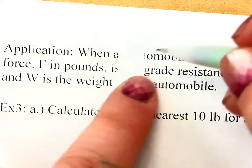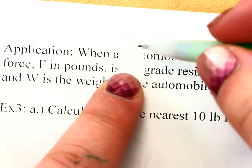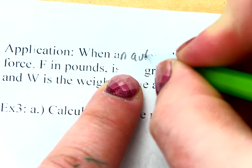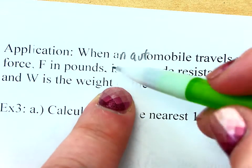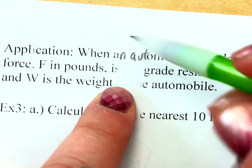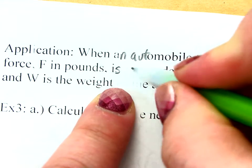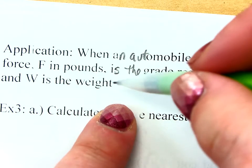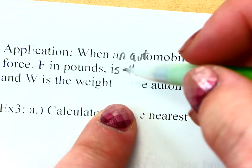So let's fill in these blanks. It should say, when an automobile, F in pounds is the. And then the last line should be, W is the weight of the.